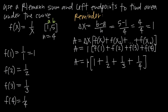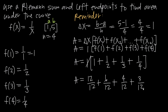Plugging those back into our area equation: area = 1 · (1 + 1/2 + 1/3 + 1/4). Multiplying by 1 has no effect, so we add the fractions using a common denominator of 12: 12/12 + 6/12 + 4/12 + 3/12 = 25/12. So our approximation for the area underneath the curve from x = 1 to x = 5 using 4 rectangles and left endpoints is 25/12.